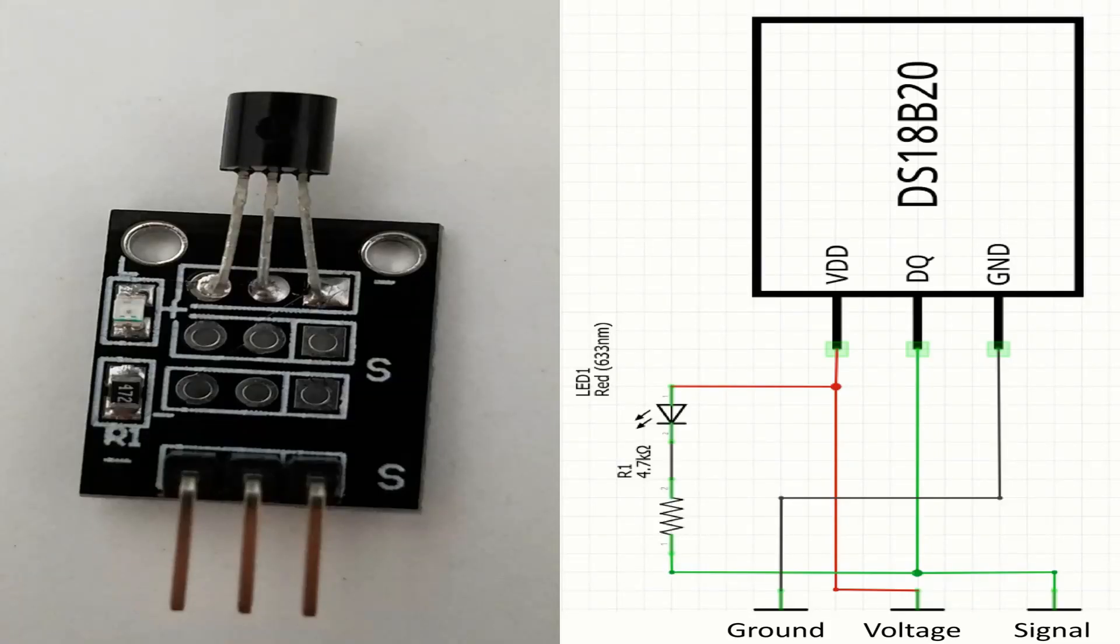The pins in this module are three. So we have the ground pin with the minus sign, the voltage pin in the middle and of course the pin of the signal with the S sign.